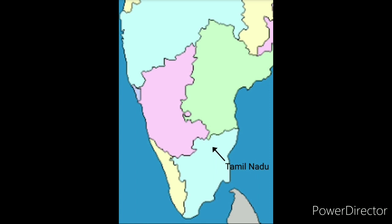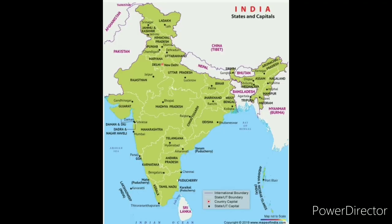On the right side of Kerala we have Tamil Nadu and its capital is Chennai. So students, these were the 28 states of India and their capitals. Hope you liked this video.